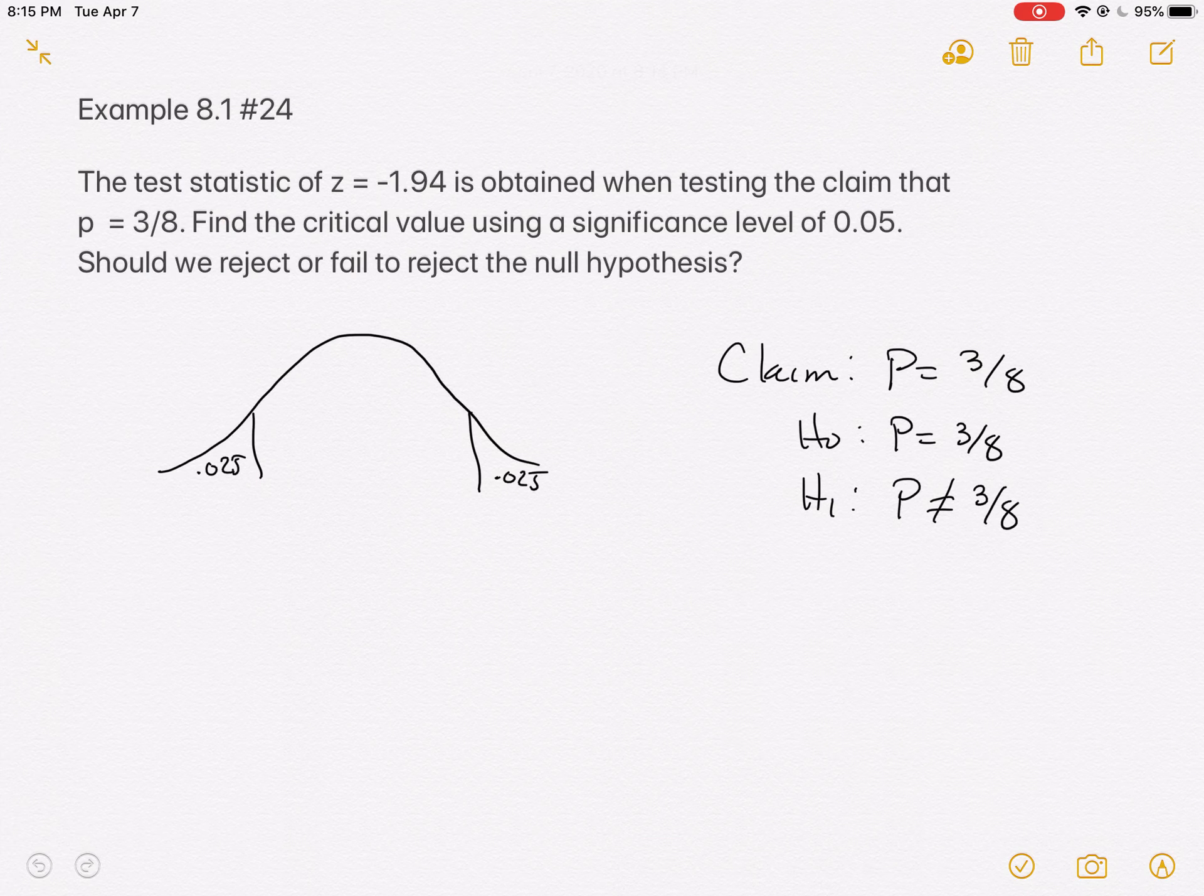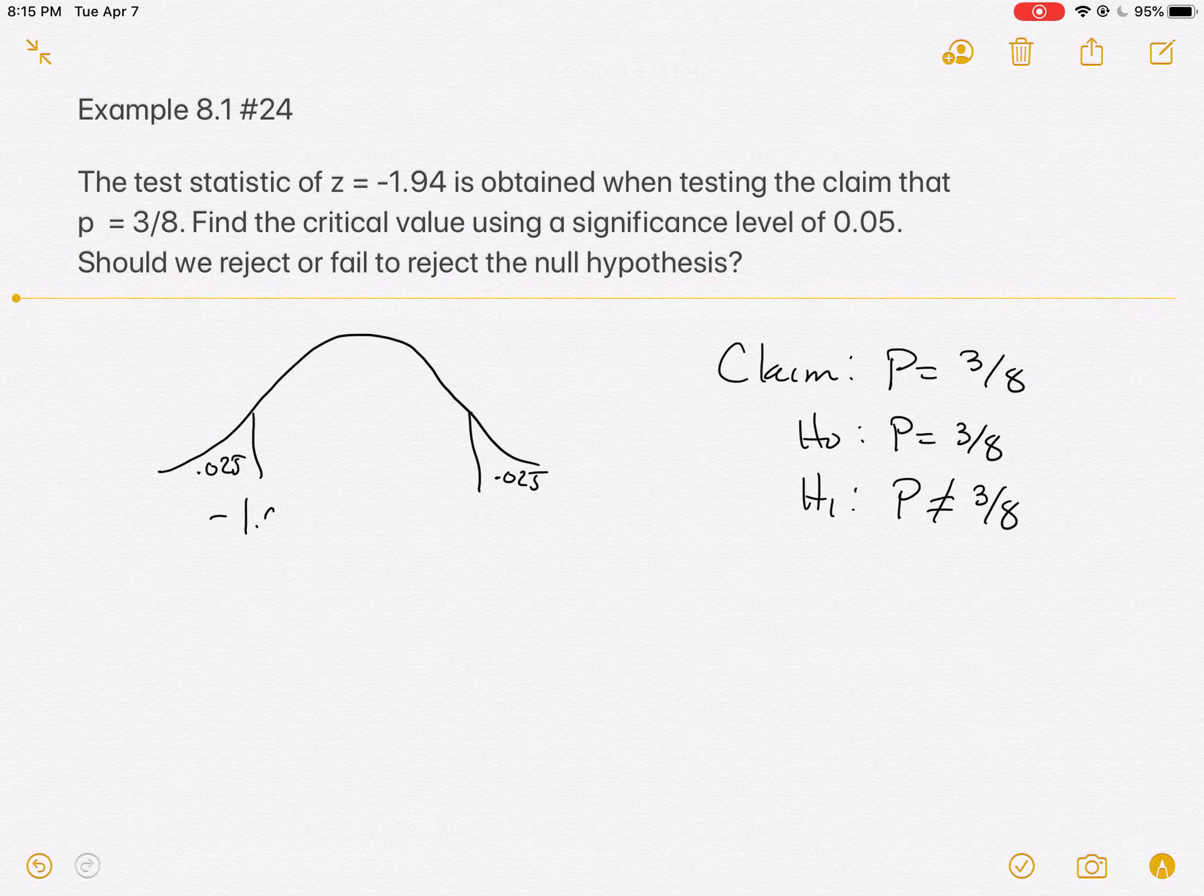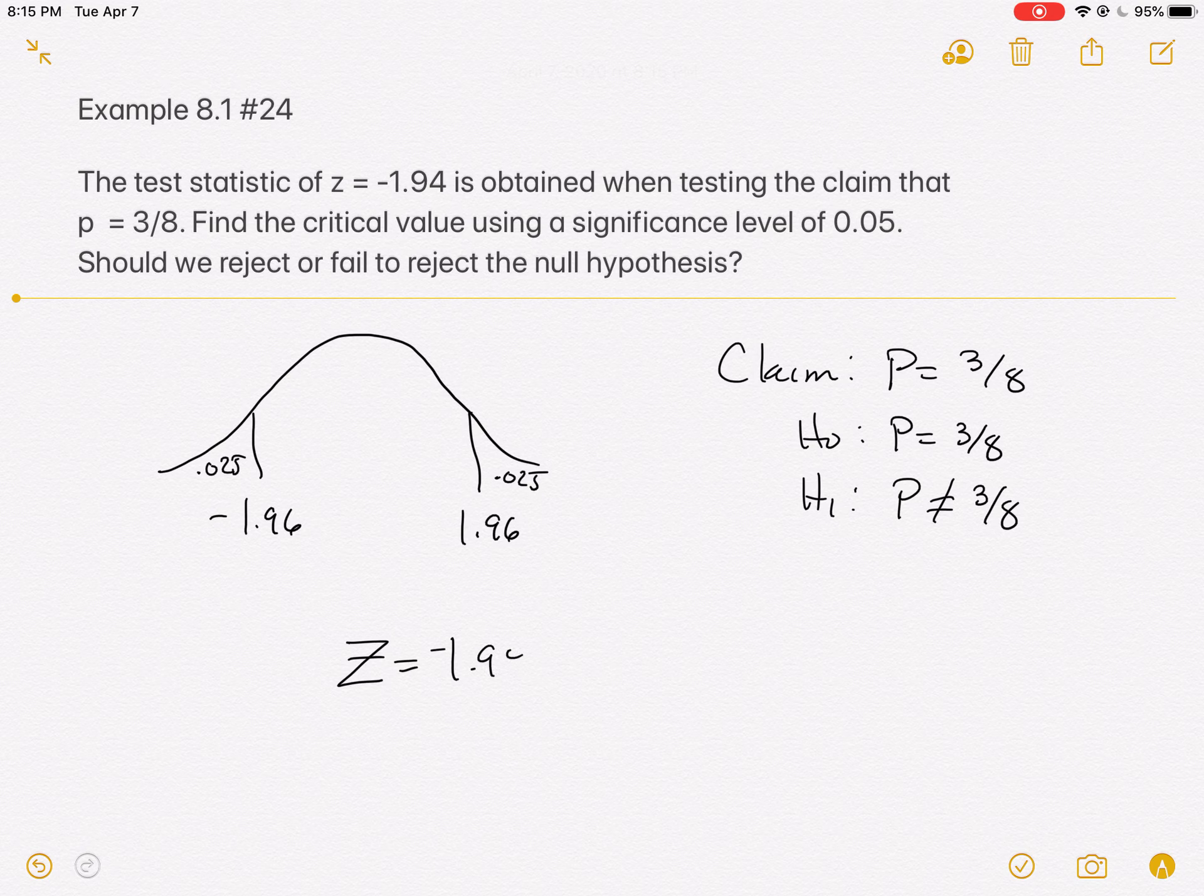Let me come back to our example. So this is negative 1.96, and this, by default, is 1.96 since it's balanced. So those are our critical values. Now, we will reject if we're more than 1.96 standard deviations away in either direction. I'm using that terminology because that's what they're giving you. They're giving you the Z-score for this situation, which was negative 1.94. And as you memorized before, a Z-score is the number of standard deviations away.